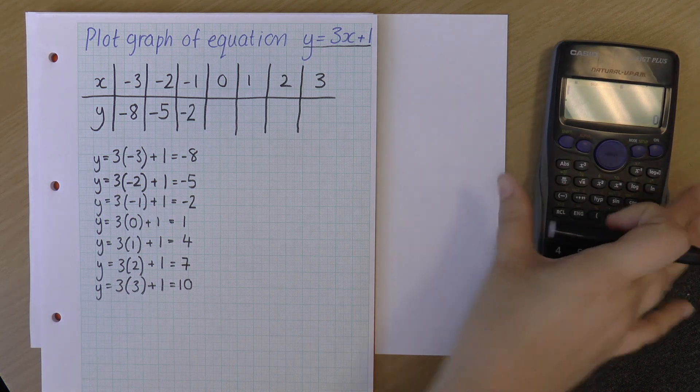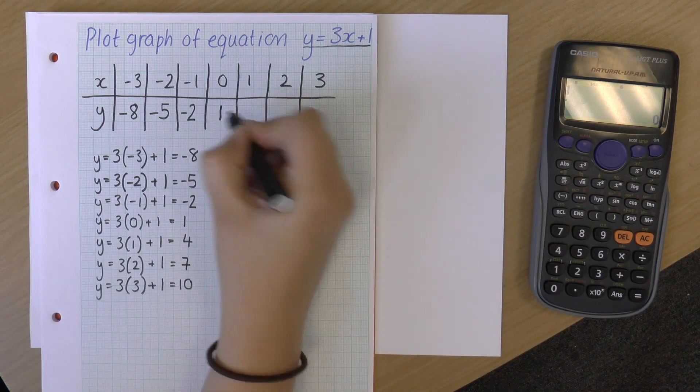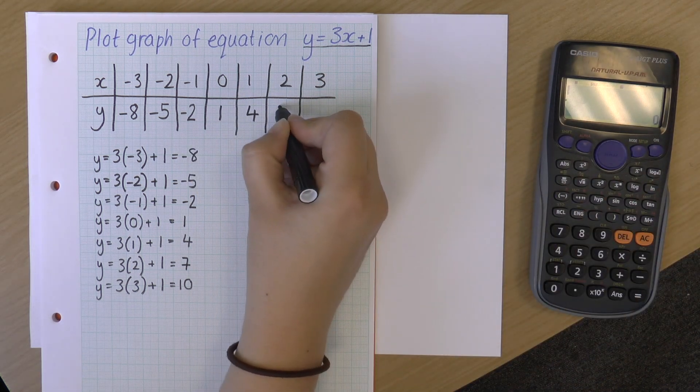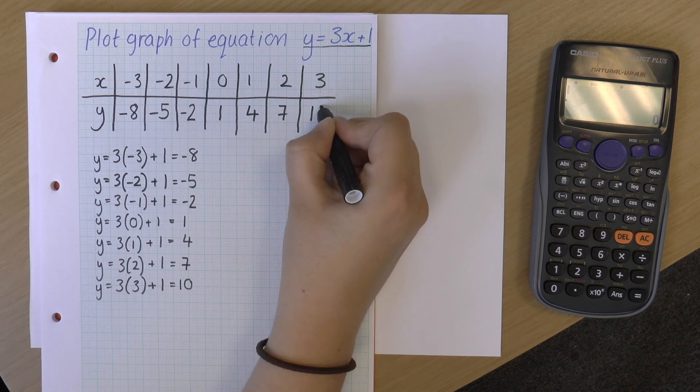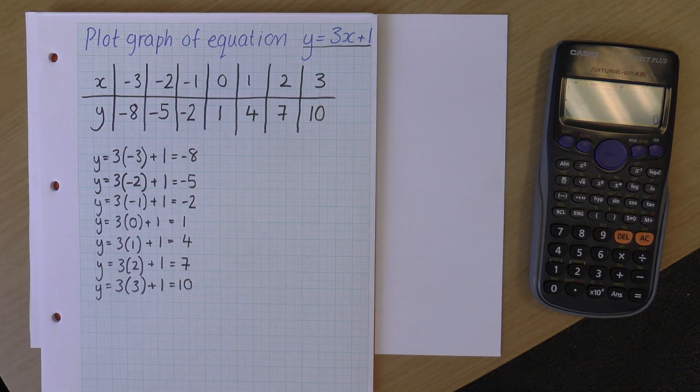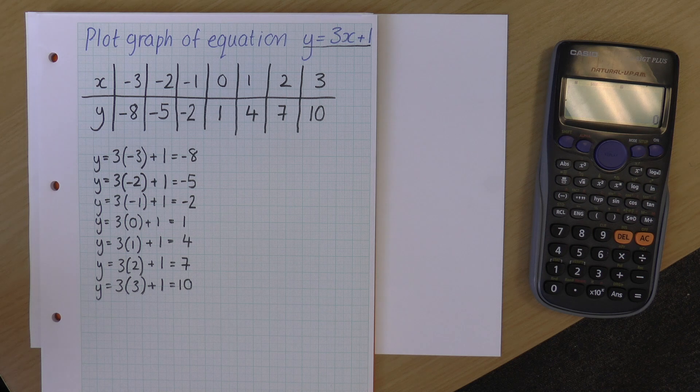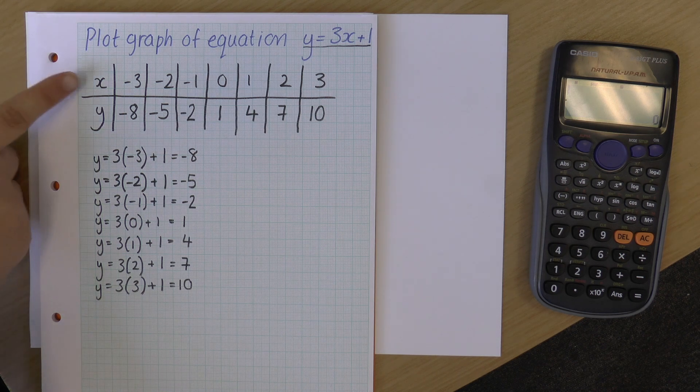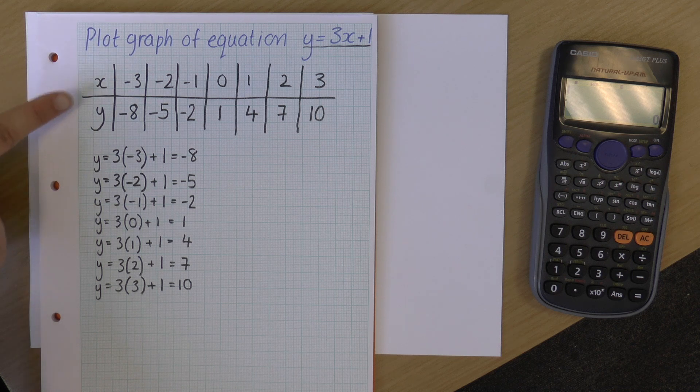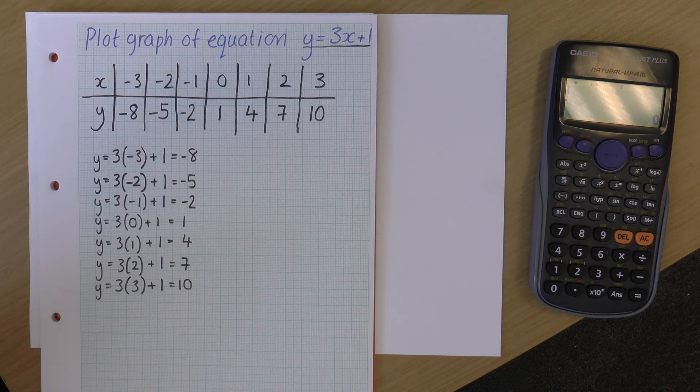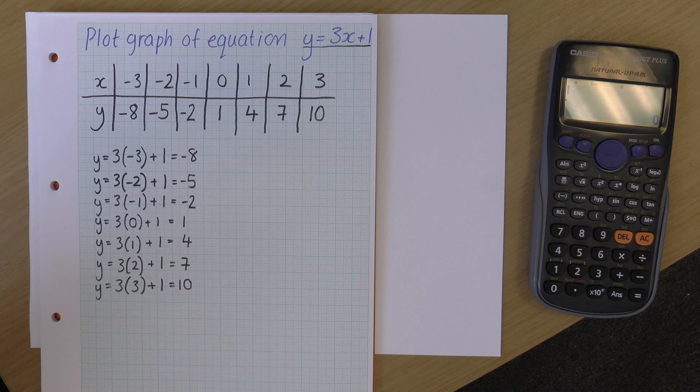I'll just write these up here as well. So I've got 1, 4, 7, 10. So I've been asked to plot this graph of equation y equals 3x plus 1, and now I have some x and y values, so I can actually start to do this.